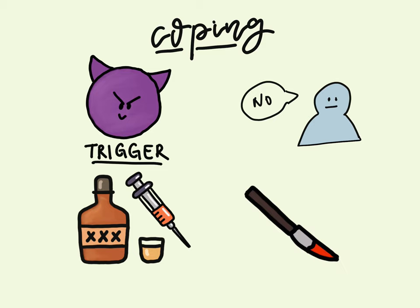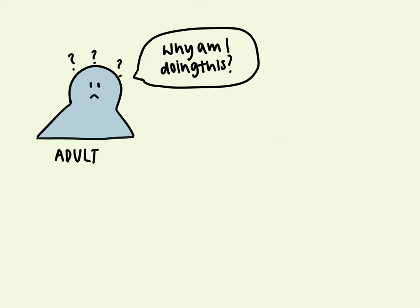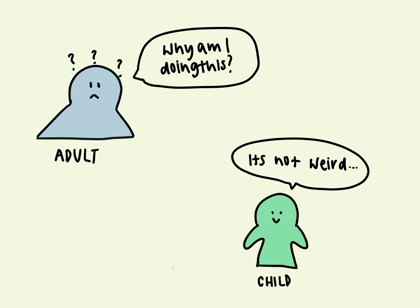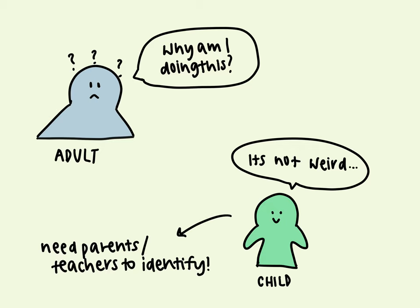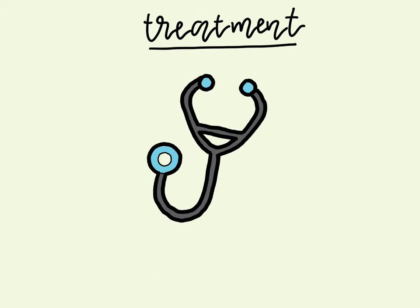People with OCD may try to help themselves by avoiding situations that trigger their obsessions, or they may use alcohol or drugs to calm themselves down. If serious, an OCD patient may even turn to self-harm or have suicidal thoughts. Although most adults with OCD recognize that what they are doing doesn't make sense, some adults and most children may not realize their behavior is out of the ordinary. Parents or teachers are typically the ones to recognize OCD symptoms in children. If you think you have OCD, talk to your doctor about your symptoms. If left untreated, OCD can interfere with all aspects of your life.